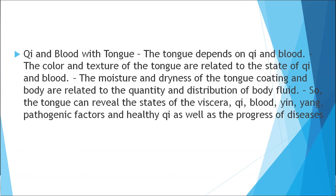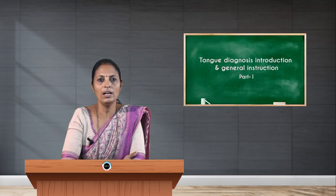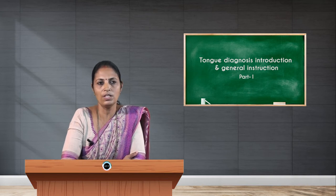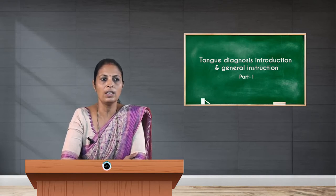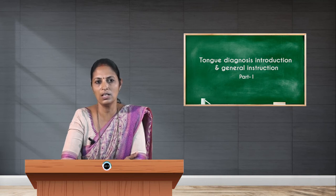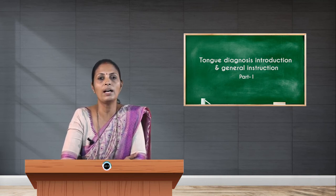We mainly consider the representation of chi and blood through the tongue. The tongue depends on chi and blood — if chi and blood are supplied to the entire body uniformly and regularly, the tongue shows a healthy picture. The consistency and color of the tongue represent normal conditions, whereas the moisture and dryness of the tongue coating are related to the quantity and distribution of fluid as well as chi.